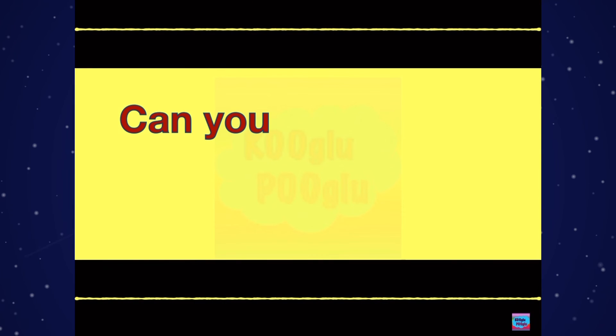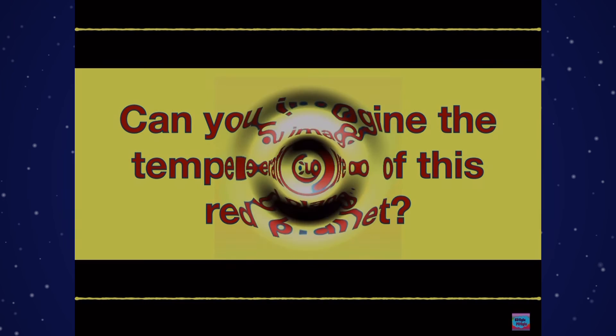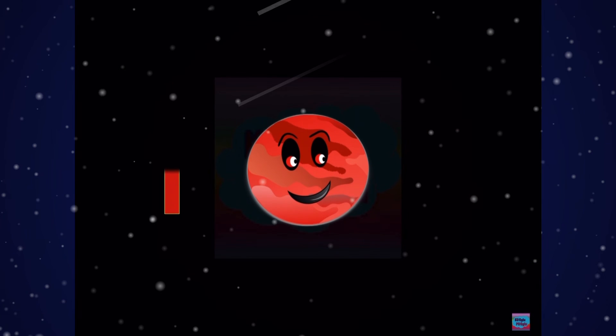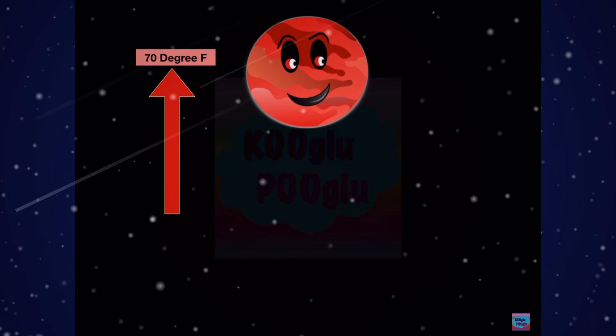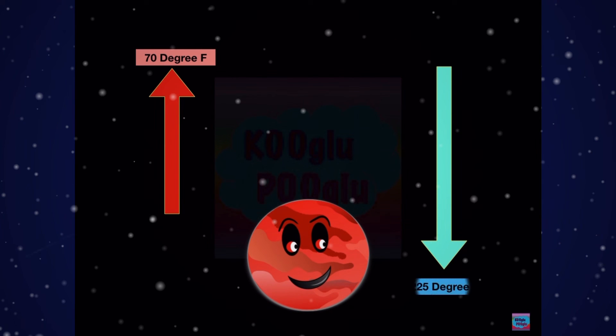Can you imagine the temperature of this red planet? On Mars, the temperatures go up to 70 degrees Fahrenheit, while when it gets cold, it goes as low as minus 225 degrees Fahrenheit.